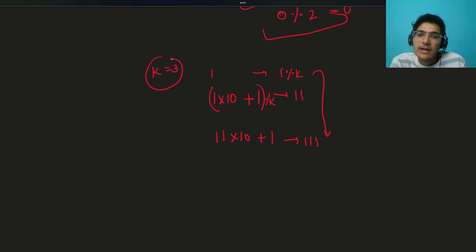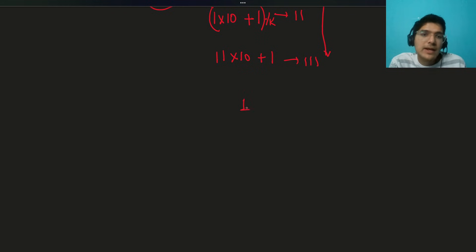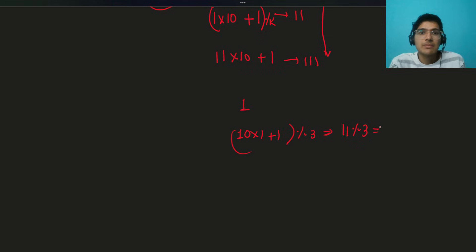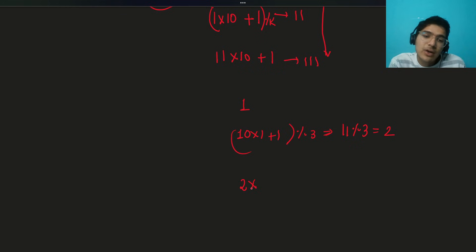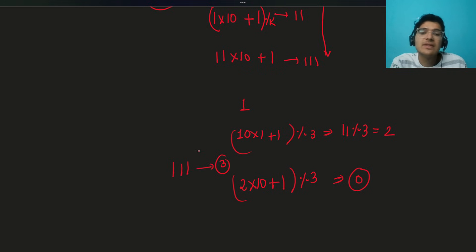Let's take k=3 as an example. We start with remainder 1. Then 1×10+1 = 11, and 11 modulo 3 = 2, so we store 2. Next: 2×10+1 = 21, and 21 modulo 3 = 0. We found the modulo is 0, meaning 111 is divisible by 3. The answer is 3 digits. This is exactly why we only need to track the remainder, not the full number.